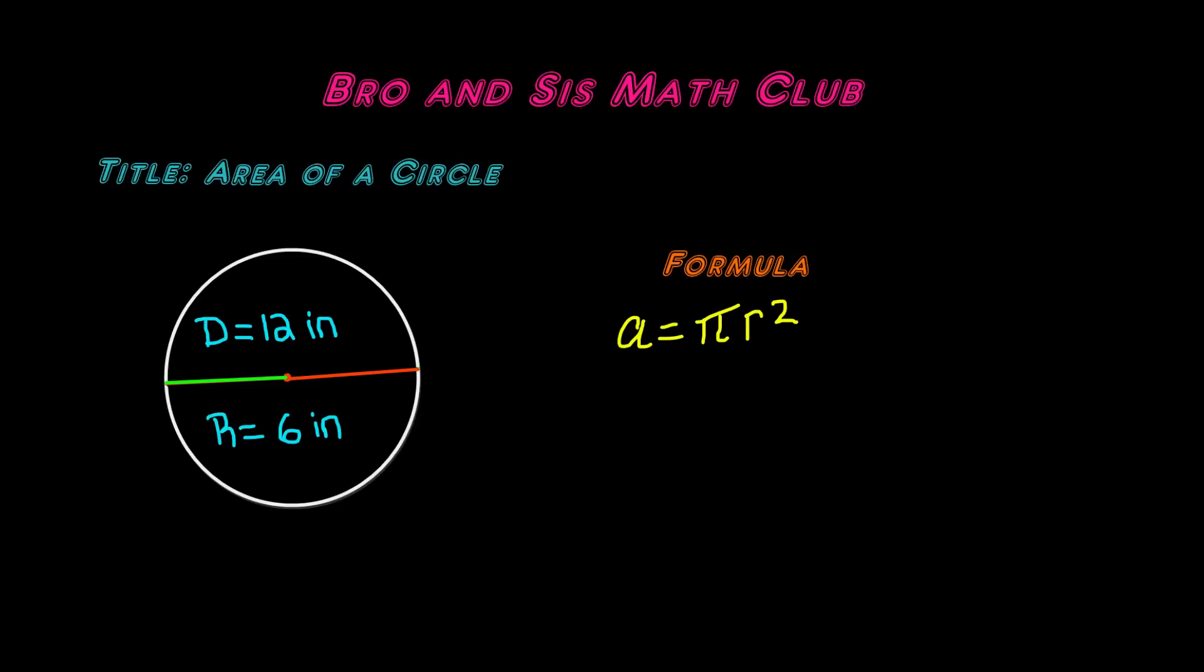So now let's plug that into our formula. Area equals pi times 6 squared. 6 squared is the same thing as saying 6 times 6, which is 36. So we will have to do area equals pi times 36.